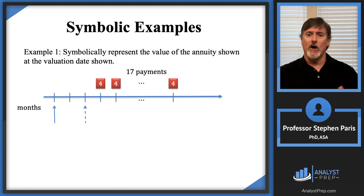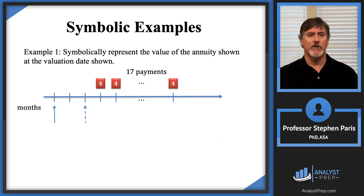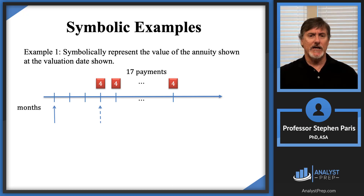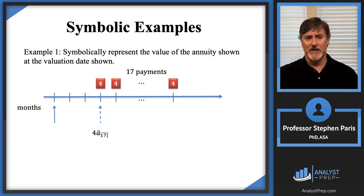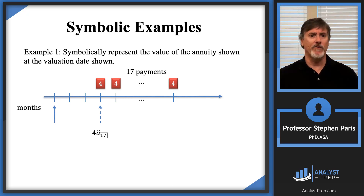There are other ways to get a symbolic representation of the value of the annuity. For instance, if I choose the intermediate valuation date at the time of the first payment, I can use the symbol four times A-double-dot-angle-17 as the value of the annuity at that dotted line. Then I would need to discount that for three months to get back to the original valuation date, multiplying by V-cubed.